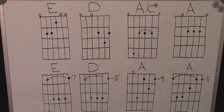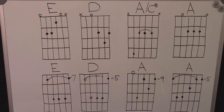Here are the chords that are needed. To play this song you can make choices about whether to play a riff or rhythm in different positions during the song. There are two different E chords, two different D chords, an A with a C sharp bass note, and three different A chords that you can choose from.